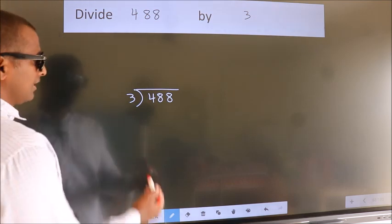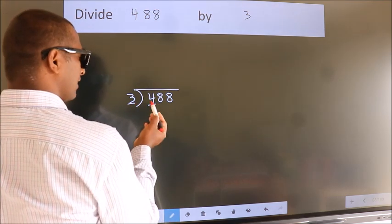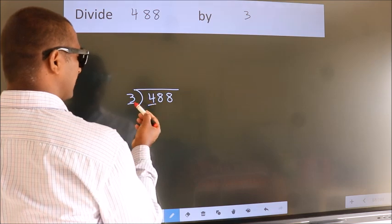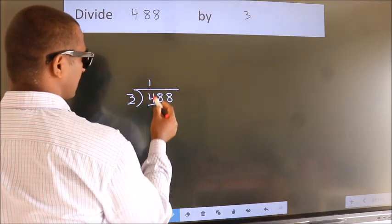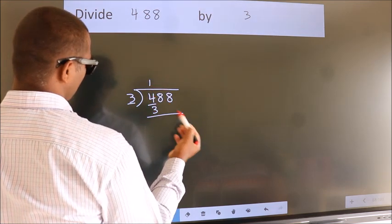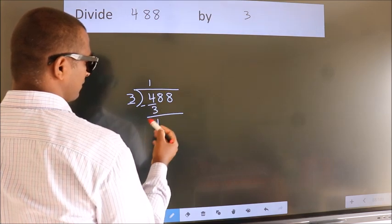Next, here we have 4, here 3. A number close to 4 in 3 table is 3 once 3. Now, we should subtract. We get 1.